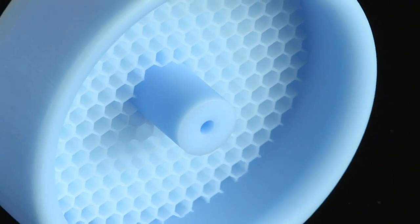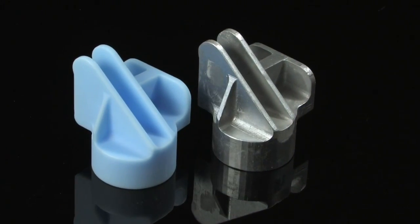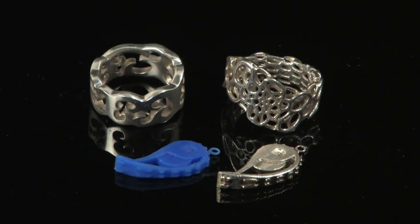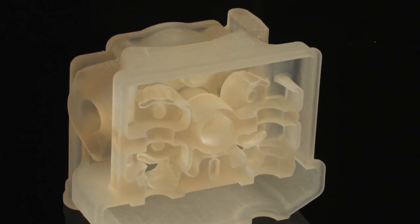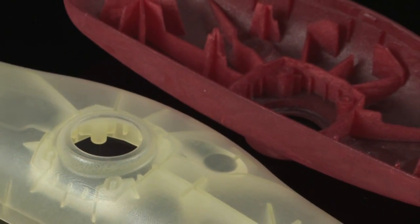Print highly detailed real wax patterns for direct investment casting to produce metal parts without additional labor and time required with traditional methods. Items ranging from jewelry to automotive and aerospace parts can be produced in small to medium volumes, saving weeks or months in the production cycle.